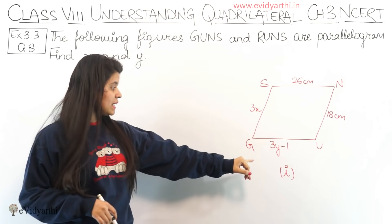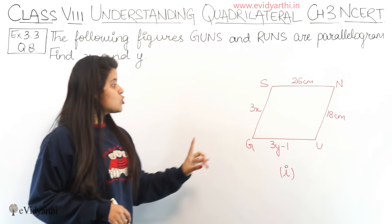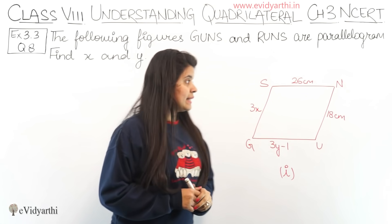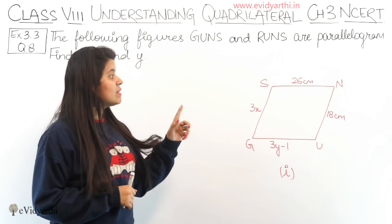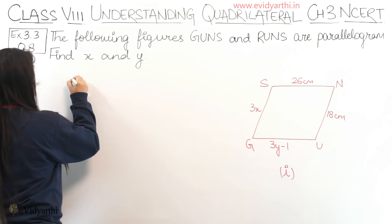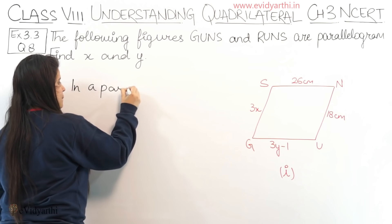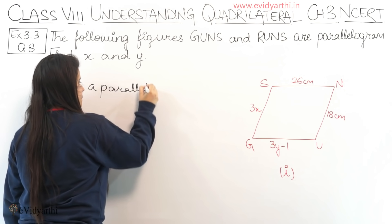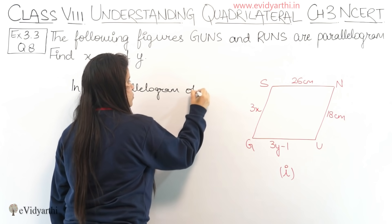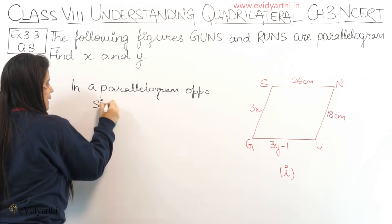First we have part one which is GUNS. We need to find the value of X and Y. Since it is given that GUNS is a parallelogram, we know that in a parallelogram opposite sides are equal.